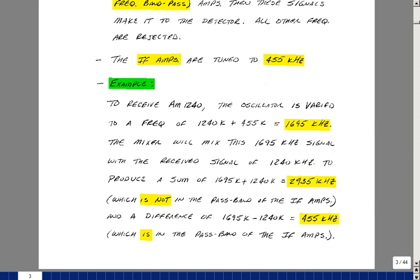The mixer is going to create a sum and a difference with that frequency with the received signal at AM 1240. When you add 1240 to 1695, you get 2.935 megahertz, and that's going to be outside of our IF bandpass amplifiers with center frequency of 455 kilohertz. But the differencing of 1695 with the received signal at AM 1240 is 455 kilohertz, and this will pass through both amplifiers and give us pretty solid filtering of the signal that's been received.